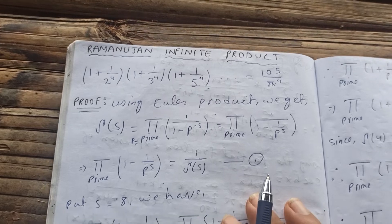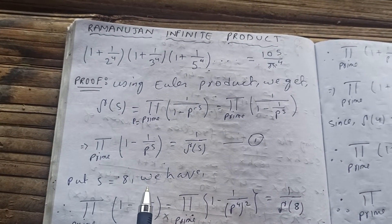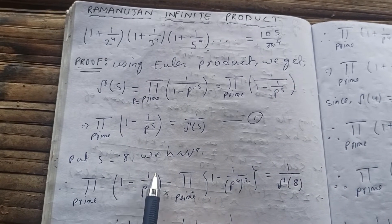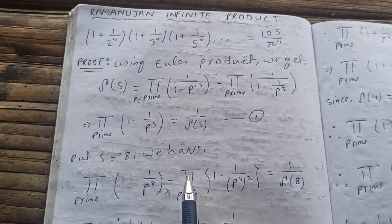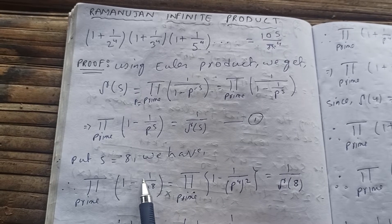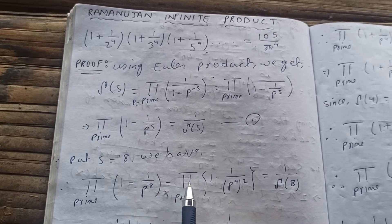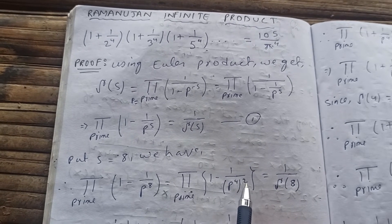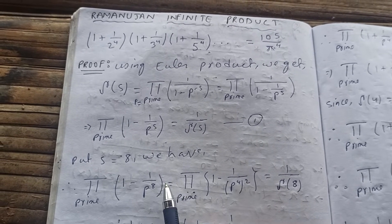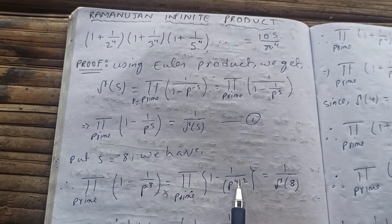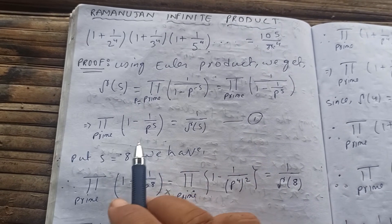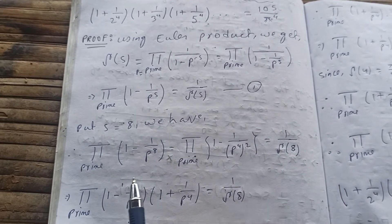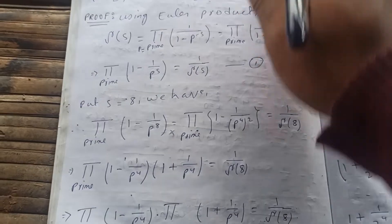Now putting s = 8 in equation 1, we have that the product over primes of (1 − 1/P⁸) equals 1/ζ(8). We can simplify this: the product over primes of (1 − 1/P⁴)² equals 1/ζ(8), since P⁸ = (P⁴)².